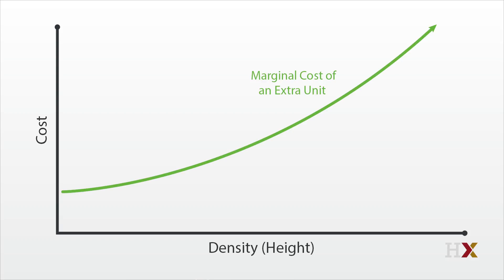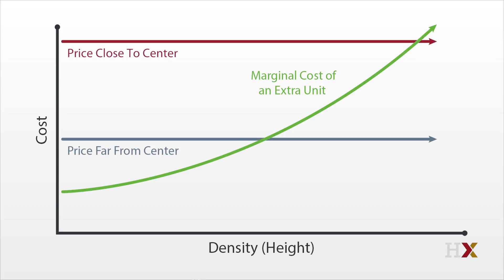Every building at every location faces a distinct price created by the demand for proximity. So let's draw two lines reflecting the price close to the city center, which is high, and the price far from the city center, which is low. Smart builders will continue building until the point where price equals marginal cost — the intersection of those horizontal lines with the cost curve. That intersection delivers a density for each price, and given that price differs with distance, we get a different density for each distance, which we can add to the original diagram.